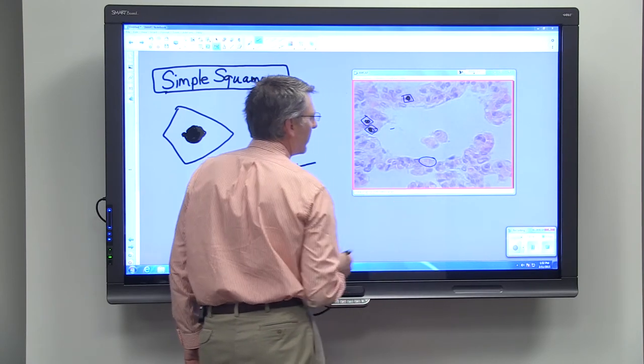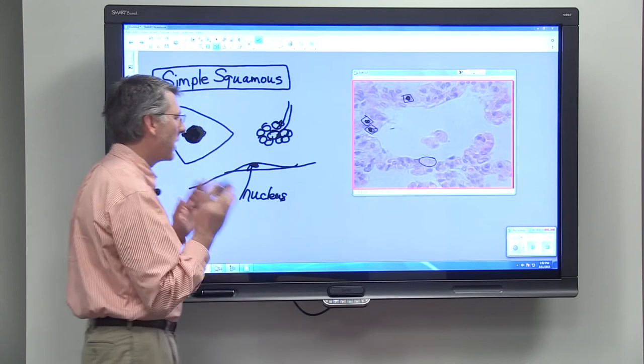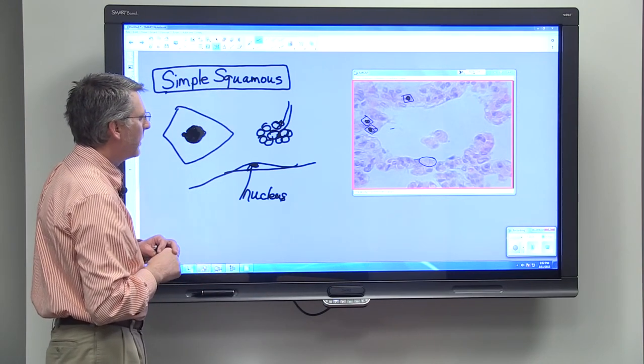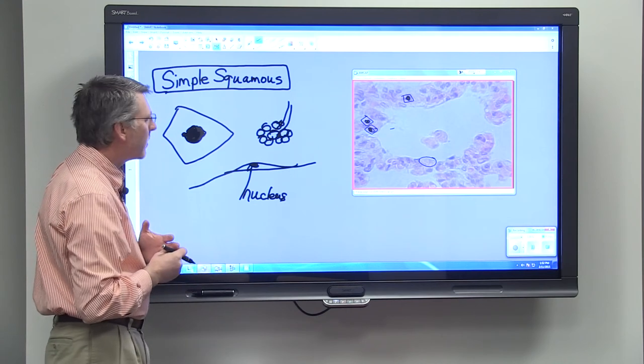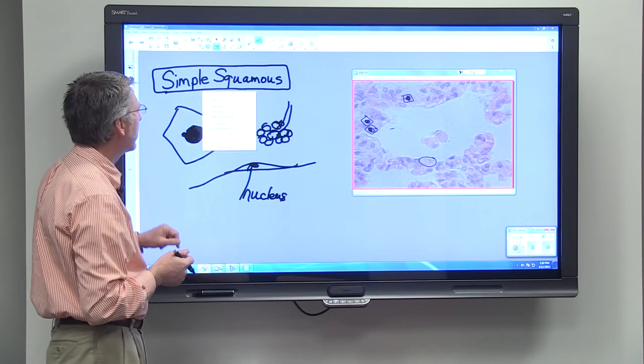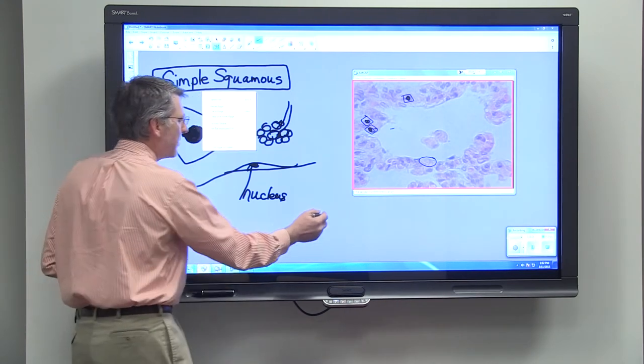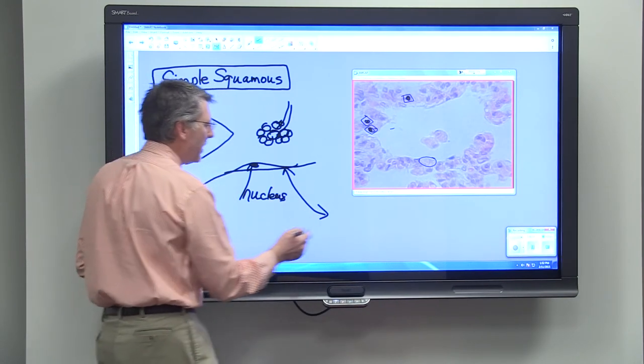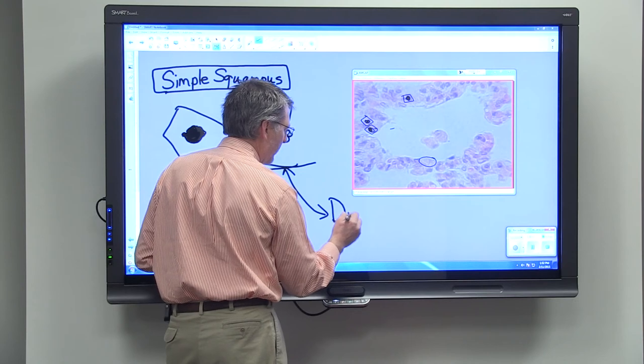In this area, you can see no nuclei, and that's just because of the way the slide was made. Now, one important function of simple squamous epithelial tissue that we didn't mention when we were talking about epithelial tissues in general is diffusion.